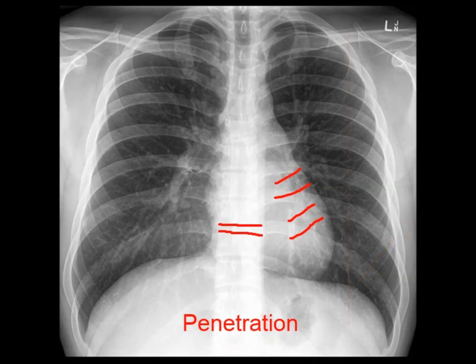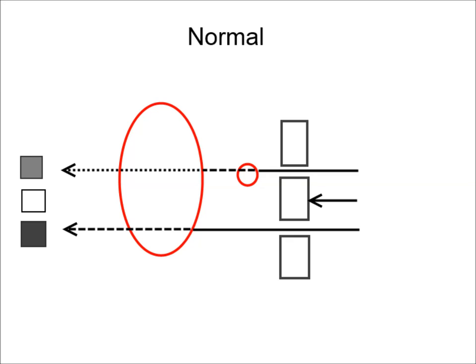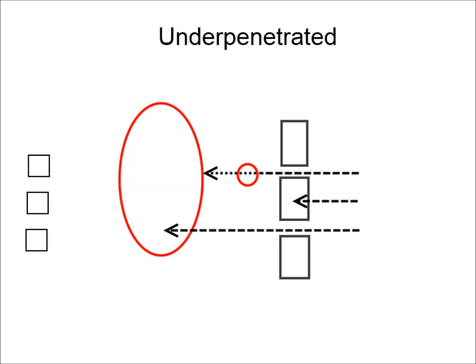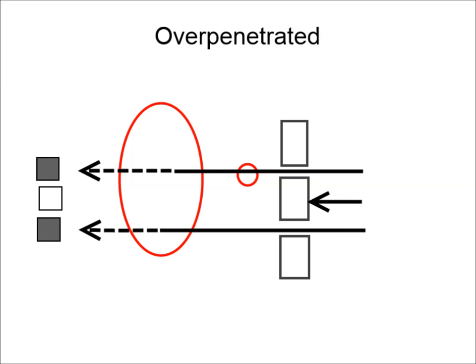Finally, check the penetration of the rays. An overpenetrated film is too dark; an underpenetrated one is too white. A trick to judge penetration is to look in the region of the heart — if you can see the spaces between the vertebrae and pulmonary vessels through the heart, penetration is adequate. In an underpenetrated film, the weak x-rays fail to penetrate even the soft tissue of the heart, meaning the heart appears just as white as bone. In an overpenetrated film, the powerful x-rays go straight through the small pulmonary vessels making them invisible, while the heart appears darker than it should.